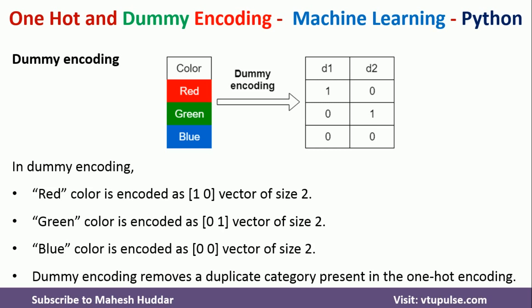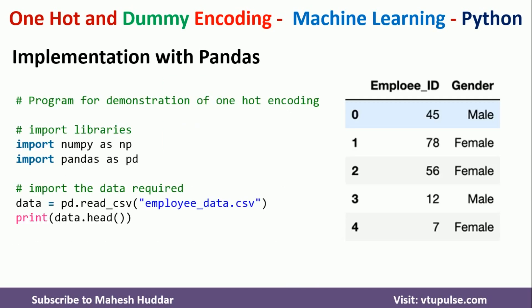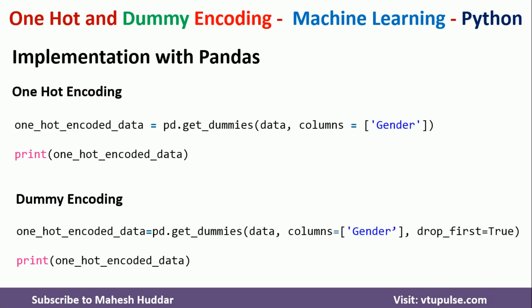These two encodings can be implemented using either pandas or sklearn. First we will see how to implement with pandas. We import numpy and pandas, then read the data from 'employee_data'. Once we read the data, we print the first five rows. The dataset has an employee ID column and a gender column with values like male or female, and we want to convert the gender column into one-hot encoded data.